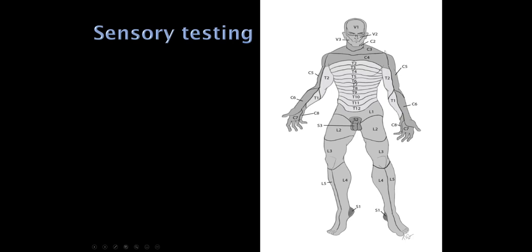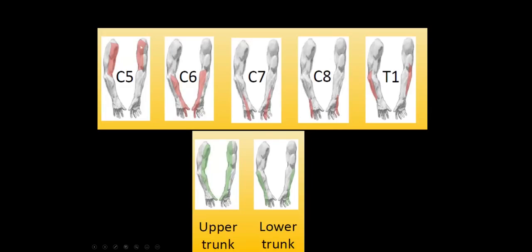A diagram shows: C5 numbness at the lateral shoulder, C6 down to the thumb (with the index finger shown as C6 here), C7 more of the palm and digits 3 and 4, C8 the fifth digit, and T1 the medial forearm. If we have an upper or superior trunk lesion, that's a combination of C5 and C6 — lateral shoulder all the way down to the hand. If we have a lower or inferior trunk lesion, that's a combination of C8 and T1 — medial forearm down to the fourth and fifth digits.